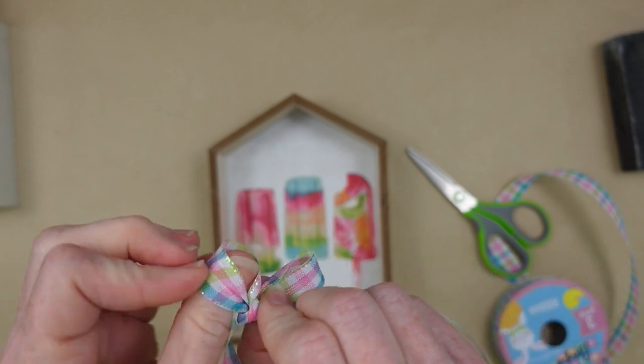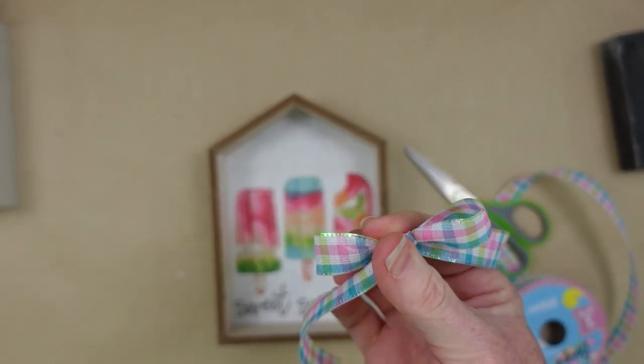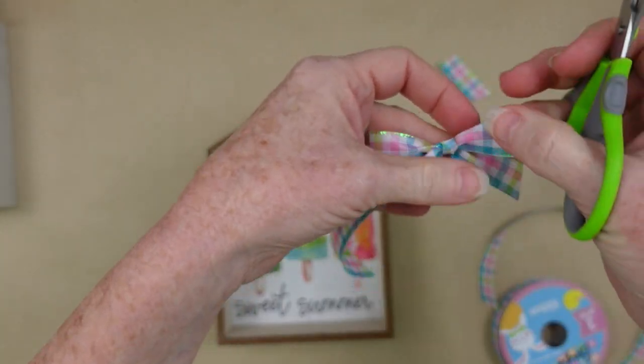So this is a little simple shoelace bow. I bump the camera, and then I'm just going to trim those tails down where they won't be in the way of our little popsicles.